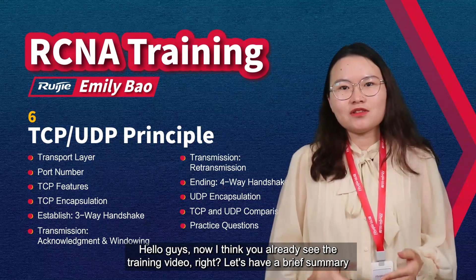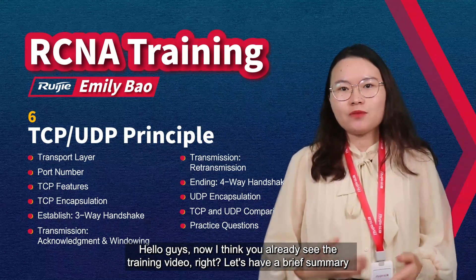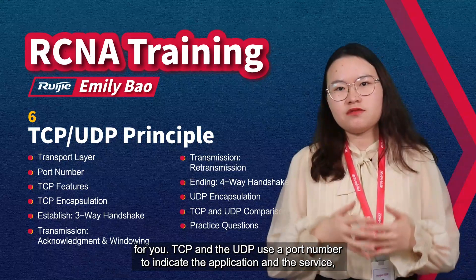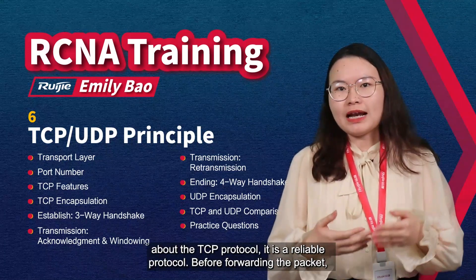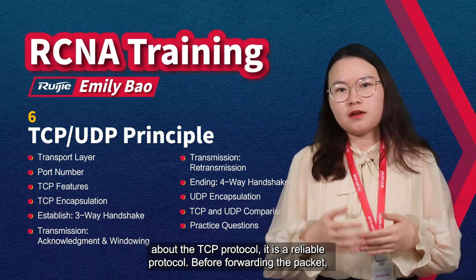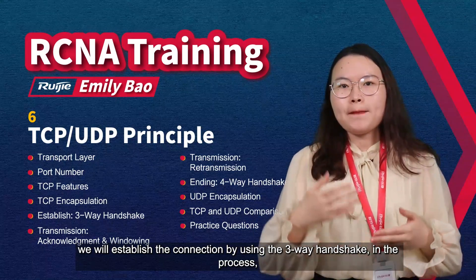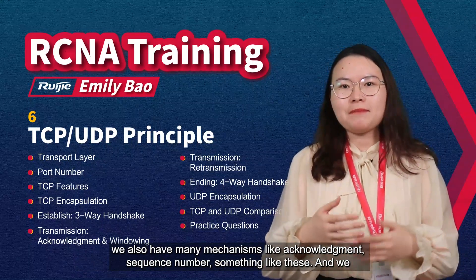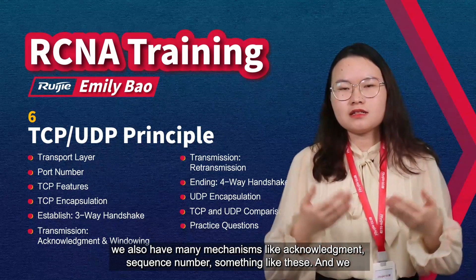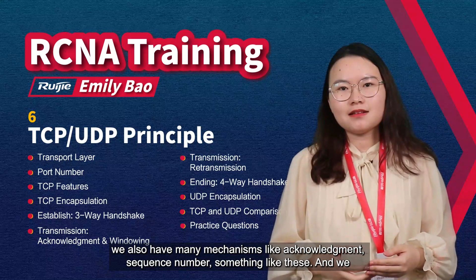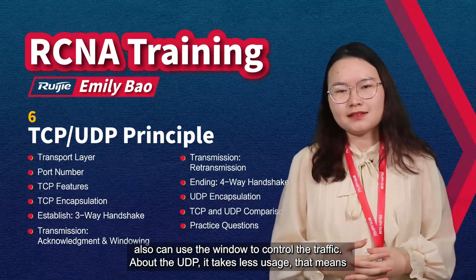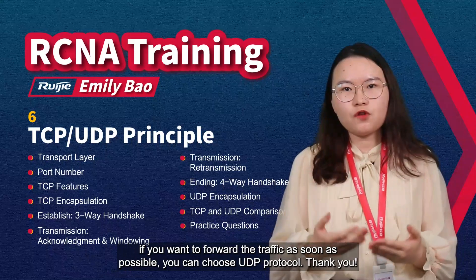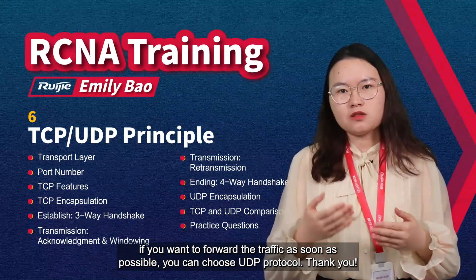Now let's have a brief summary. TCP and UDP use port numbers to indicate the application and service. TCP is a reliable protocol — before forwarding packets, it establishes the connection using the three-way handshake. During the process, it uses mechanisms like acknowledgement, sequence numbers, and window for traffic control. UDP uses less overhead — if you want to forward traffic as soon as possible, you can choose UDP protocol.